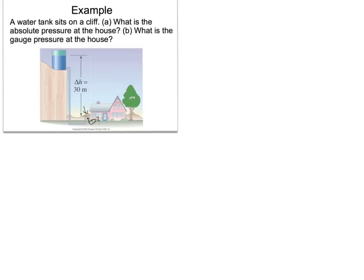The problem asks: what is the absolute pressure at the house? The formula for absolute pressure is P equals P₀ — which is generally the pressure from Earth's atmosphere — plus the gauge pressure, rho G H. Yesterday I told you about the density of water, which if you haven't memorized at this point, you should take a minute and do so now. Let me list our givens.